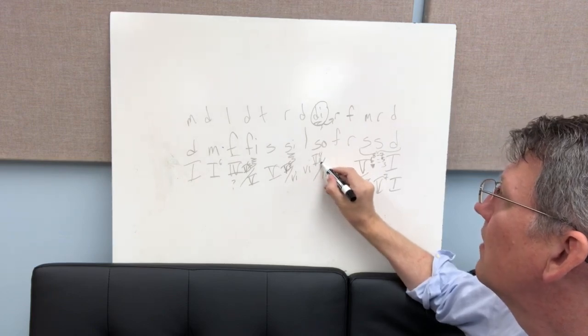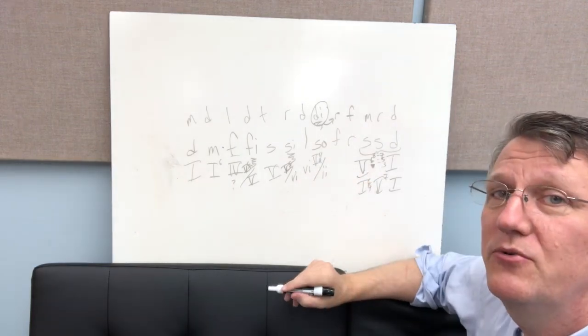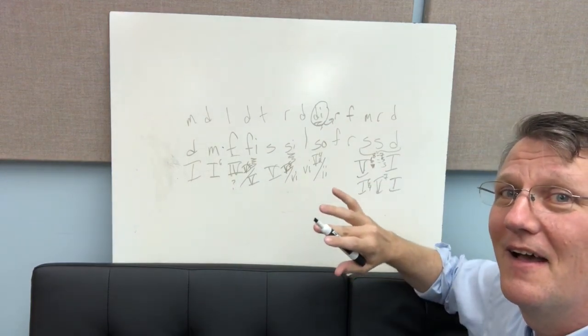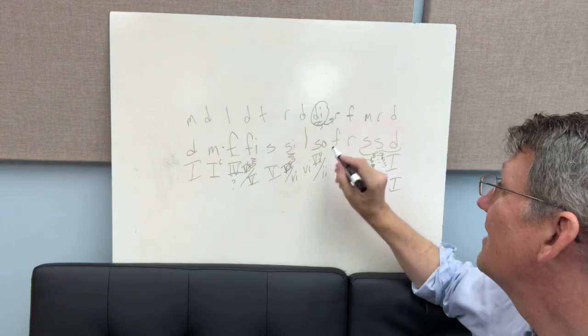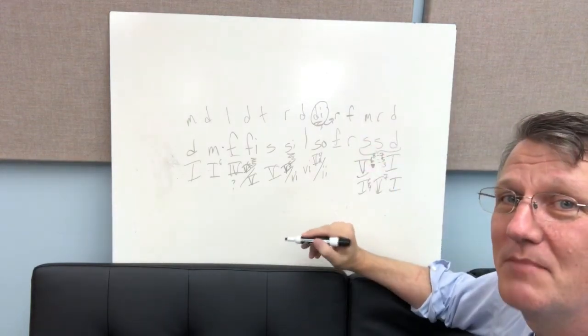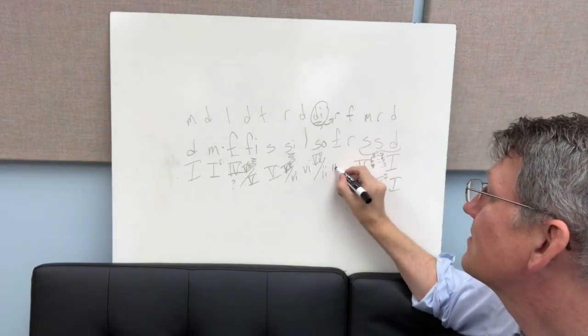Five-four-two chords tend to resolve to first inversion chords, and look, you have a fa in the bass, which just happens to be the bass note of a first inversion two chord. So we can write in two-six.